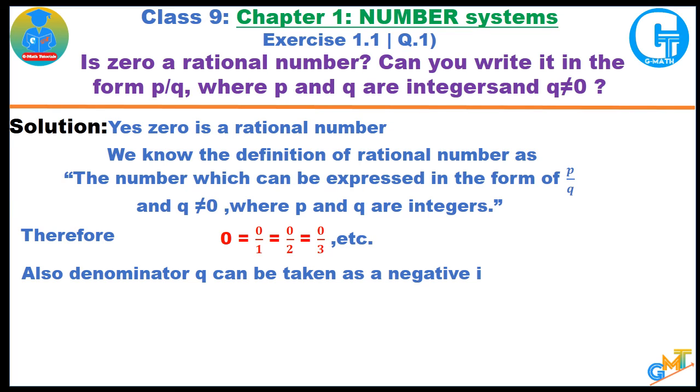Denominator q can be taken as negative numbers also. So we can express it in p upon q form. Hence we get that the solution: 0 is a rational number.